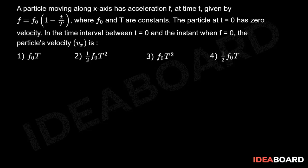A particle moving along the x-axis has acceleration f at time t, given by f equals f₀ times (1 minus t upon capital T), where f₀ and T are constants.